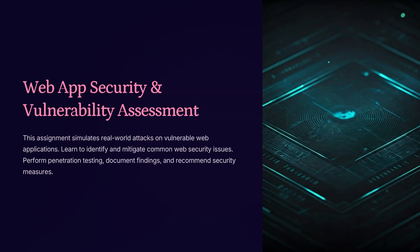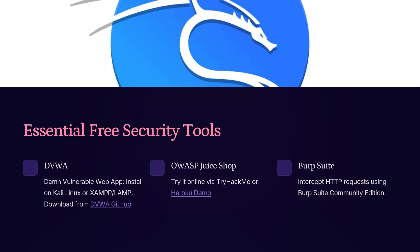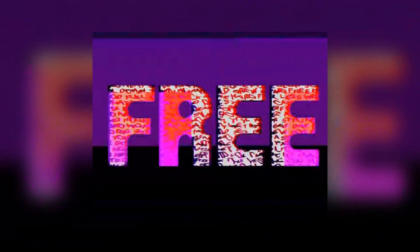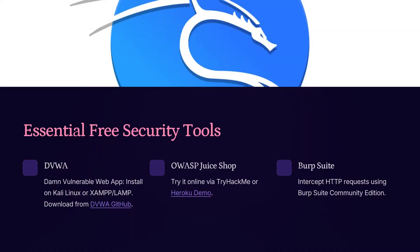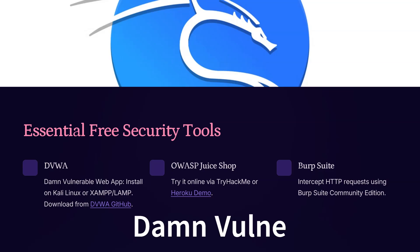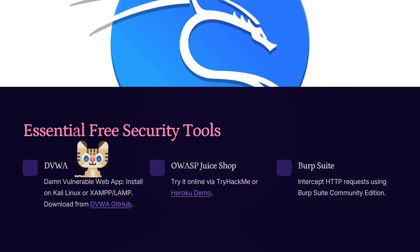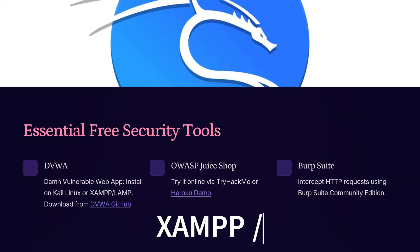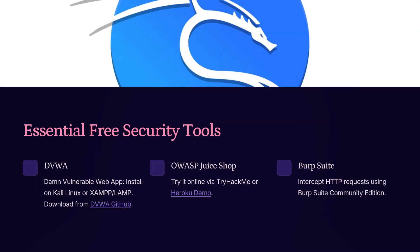Let's dive in. In this assignment, we'll be using some essential and completely free tools to simulate web application attacks. These tools are well known in the cyber security community and are designed for learning and ethical testing. The first one is DVWA, which stands for Damn Vulnerable Web Application. It's a purposefully insecure app you can install on your own system using Kali Linux, or set up using XAMPP or LAMP on a local machine. You can download it directly from the DVWA GitHub page.